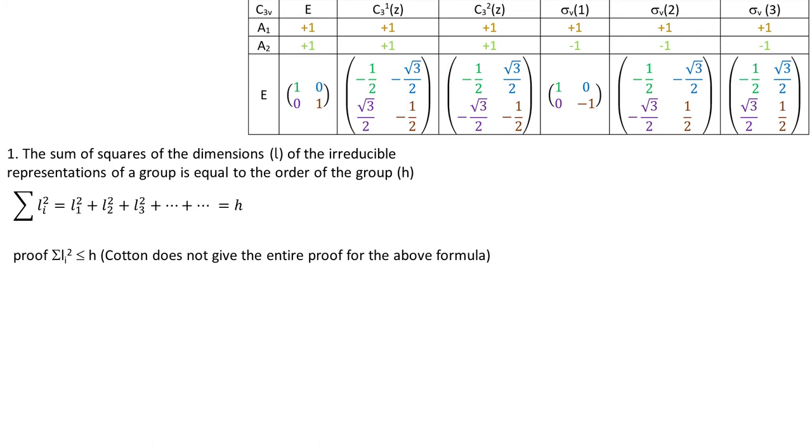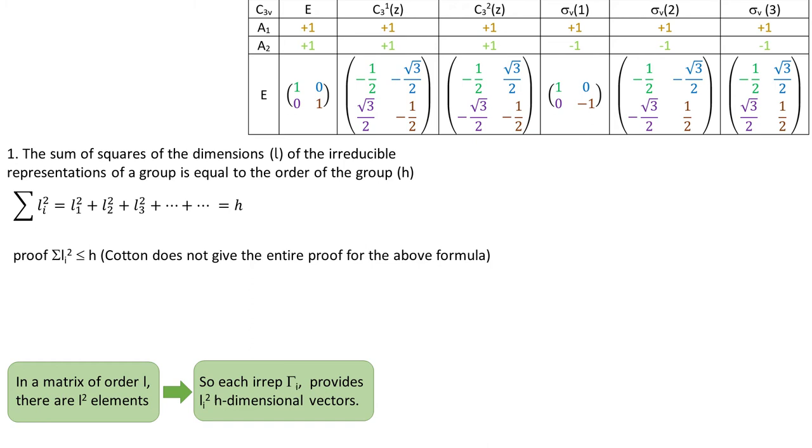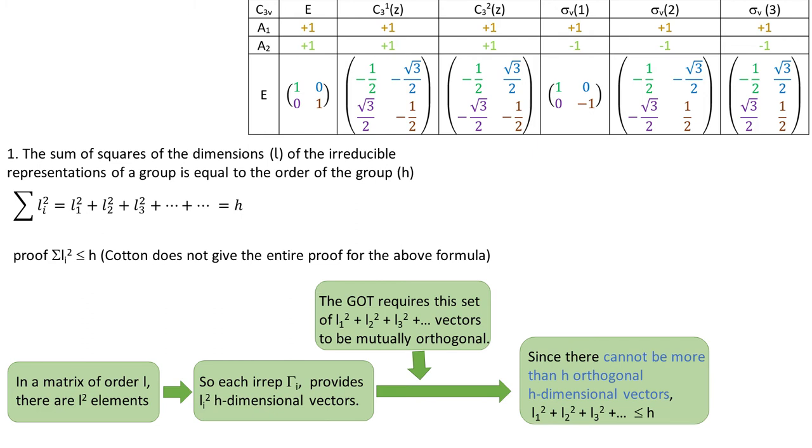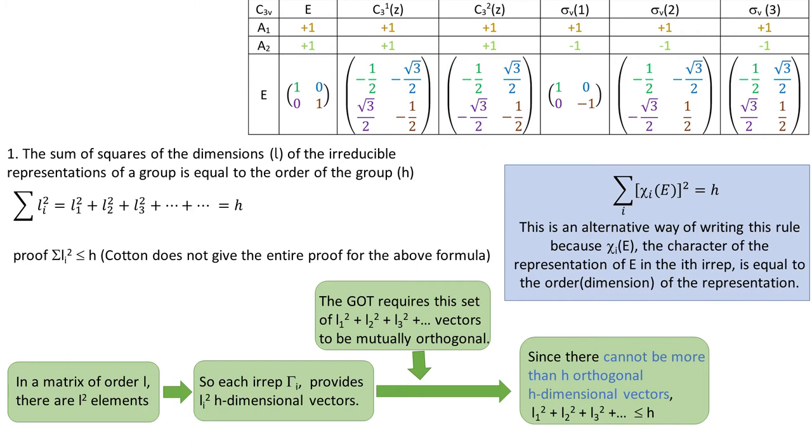First let's notice that if a matrix is of order L then there are L squared elements. So each EREP provides LI squared H-dimensional vectors. If say we deal with E EREP it provides us with four vectors and we've seen that. GOT requires these vectors to be orthogonal and there cannot be more than H-orthogonal H-dimensional vectors and that's it. I don't know how the full proof is done. Perhaps we would need to prove that these vectors span the entire RH. Anyway let's apply this equation to C3V group. One plus one plus four gives six which is the order of C3V. This is an alternative way of writing the same equation. We can write it in this form because the characters of EREPs and the E operation is equal to the dimension of EREPs.